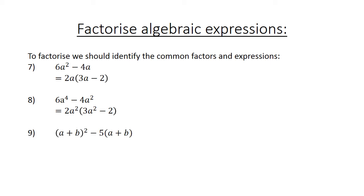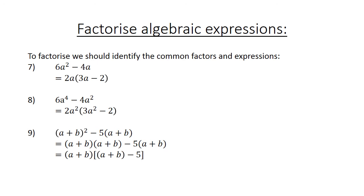Now we have (a plus b) to the power of 2 minus 5 times (a plus b). This equals (a plus b) times (a plus b) minus 5 times (a plus b). The common factor is (a plus b). Then we have in square brackets what is left: in brackets (a plus b) minus 5.